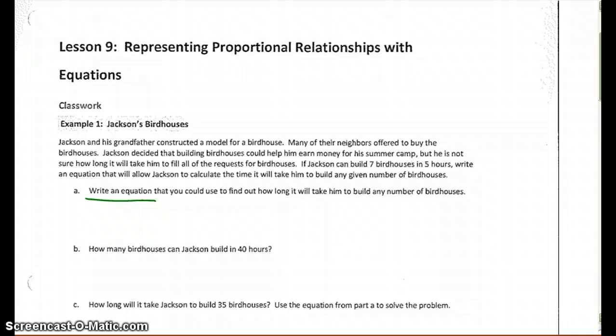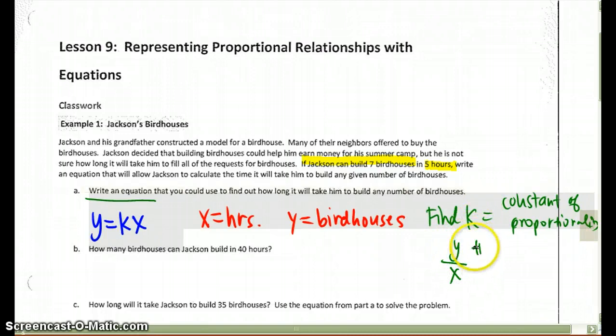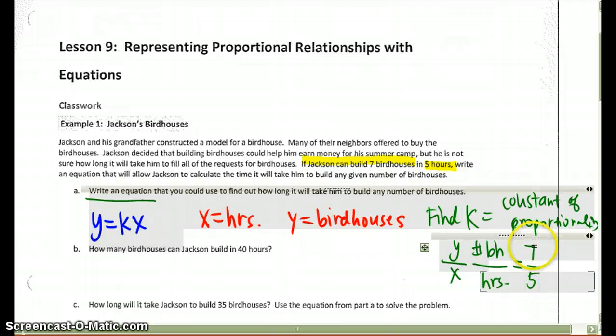Since in this question we've got that Jackson is building 7 birdhouses in 5 hours, to represent it in an equation, remember that the equation we took notes in our foldable today is y equals kx. We are going to say that our x is going to stand for hours, and y will stand for the birdhouses, which means that we need to find k, which is our constant of proportionality. The constant of proportionality is actually equal to y over x. So here, it's going to be the number of birdhouses divided by the hours. I've got 7 birdhouses per 5 hours, so 7 over 5.